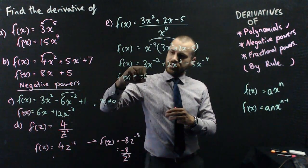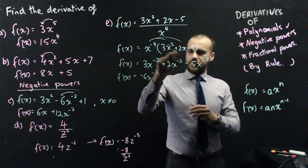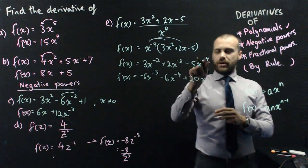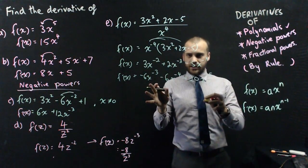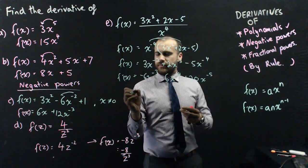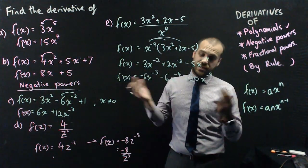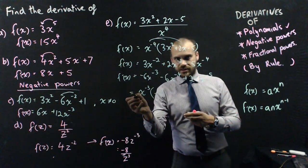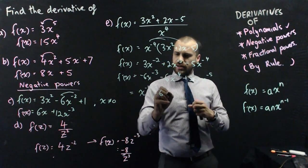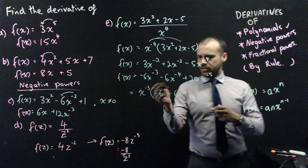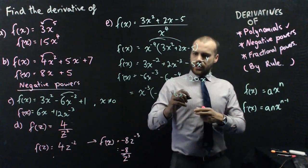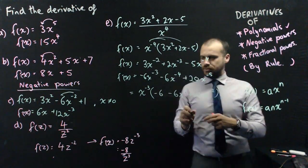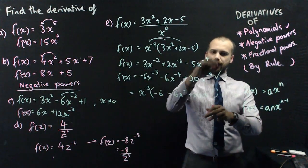So the derivative of that, negative 2 times 3 is negative 6. Decrease the power by 1, negative 3. Negative 3 times 2 is negative 6. Decrease the power by 1, negative 4. And negative 4 times negative 5 is positive 20. Decrease the power by 1, x to the negative 5. Now that's pretty ugly. We can sort of do some fancy factorization after the fact by bringing out x to the negative 3. They've all got a common factor of x to the negative 3. So that's going to be just negative 6 there. This is going to be negative 6x to the negative 1. And then x to the negative 2 there. We're getting pretty ugly there. We probably don't need to go that far. We can probably just stop right there.